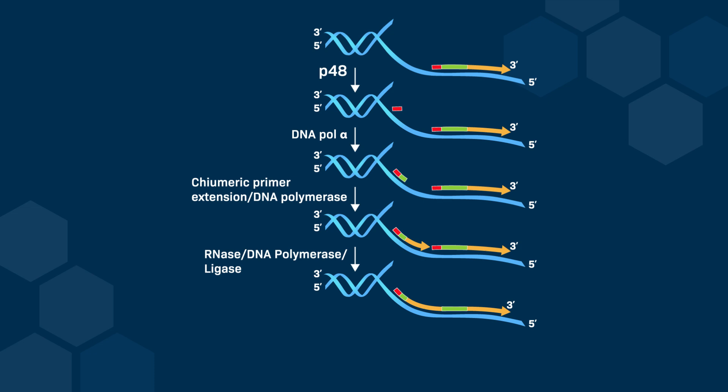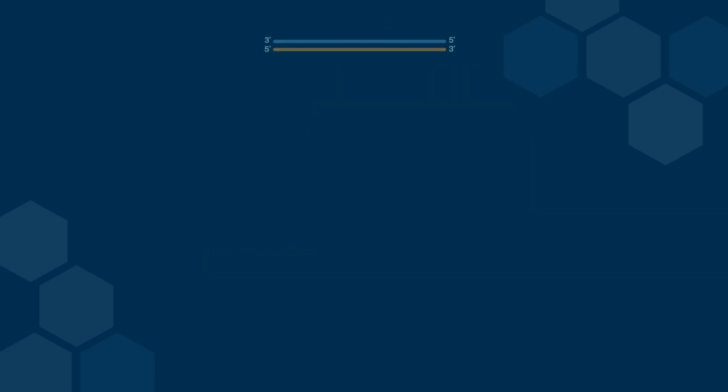Finally, as described before, the RNA portion of the primer is replaced, the gap is filled by polymerase delta, and DNA ligase seals the nick between the pre-existing and the newly synthesized Okazaki fragment. Now, what happens at the end of replication? This issue is known as the end replication problem.